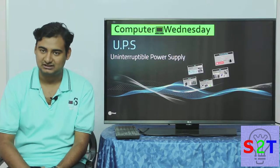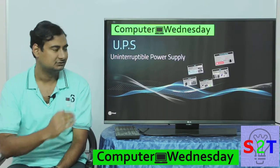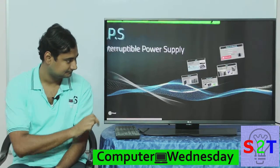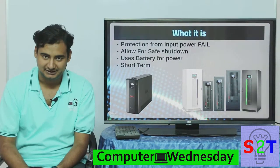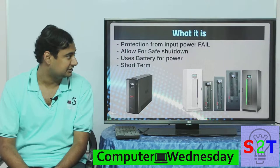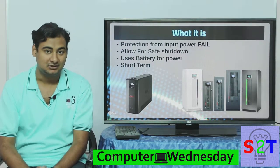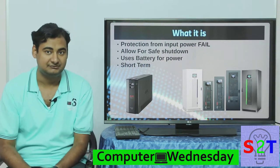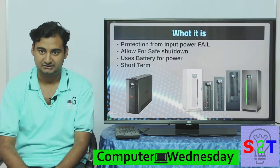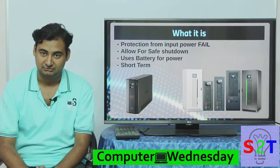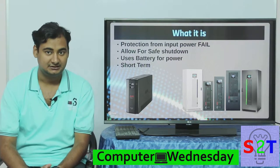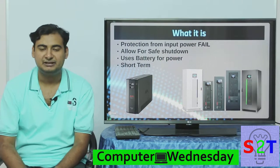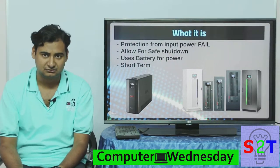Welcome to Computer Wednesday. Today we're going to take a look at UPS — an uninterruptible power supply. It's a simple concept: imagine your computer is running on mains power and your power fails. The UPS acts as a safety net to allow you to shut down your computer safely. It uses a battery for its power supply, generally meant for short durations like five to ten minutes, though one to two hours is also possible.